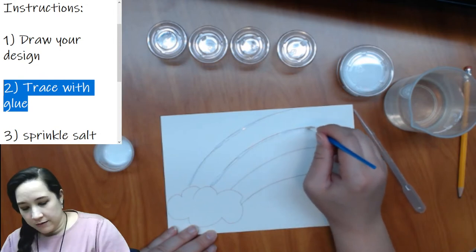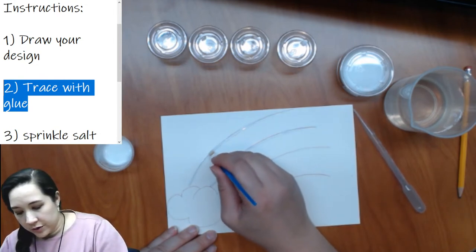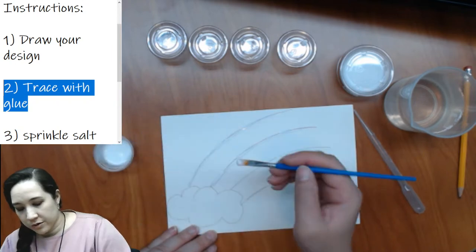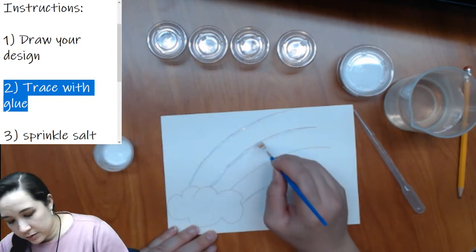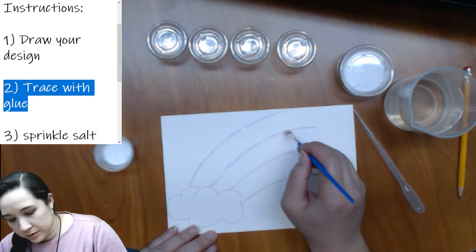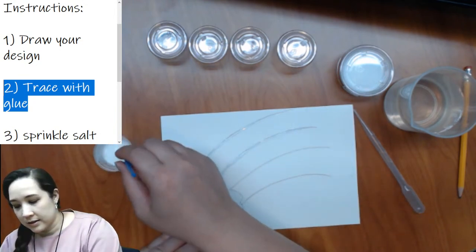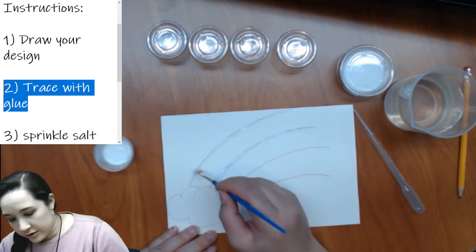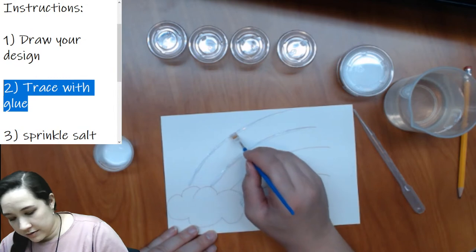Thicker the better, because the thicker it is, the more salt that can attach to it. I'm really glopping on the paint here, just so that I have a really good surface for the salt to attach to later on. And I might even do a second coat later just to make sure my glue lines are nice and thick. If you can kind of see your pencil mark through your glue, try adding a little bit more glue to cover up your pencil mark.